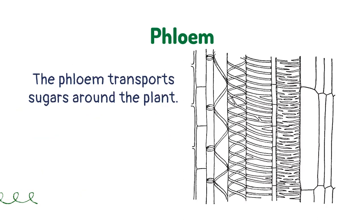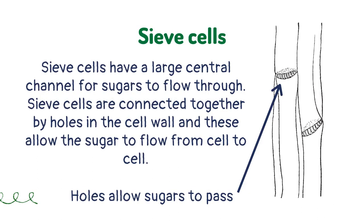The phloem transports sugars around the plant. Sieve cells have a large central channel for sugars to flow through. Sieve cells are connected together by holes in the cell wall, and these allow the sugar to flow from cell to cell.